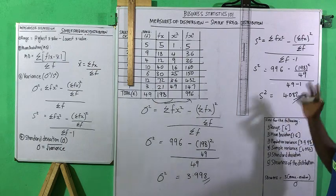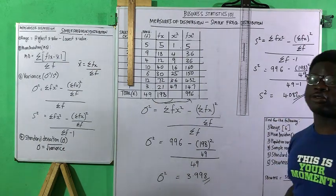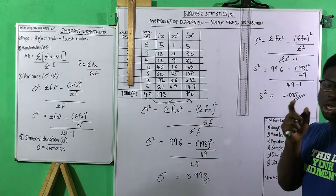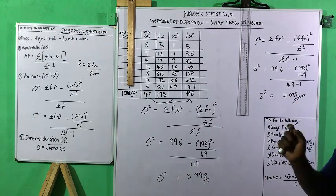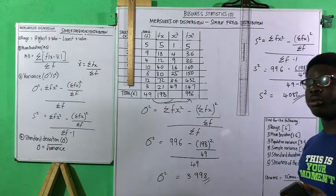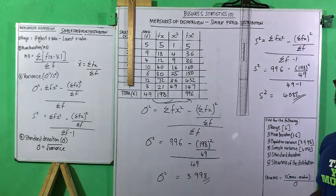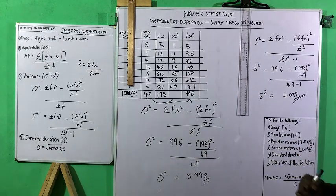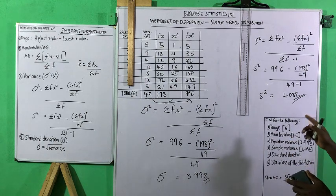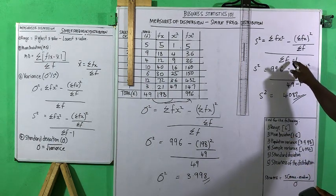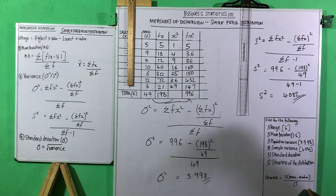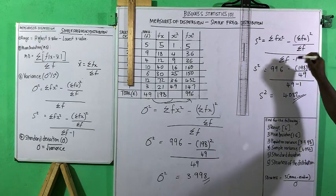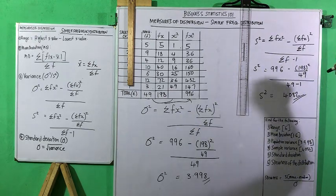In an examination, you'll only be asked to find one — just variance. The formula will be given at the back of the answer booklet. The only difference: when dealing with sample variance, it's the same formula, but the denominator becomes sigma f minus 1 instead of sigma f. That minus 1 is the denominator.